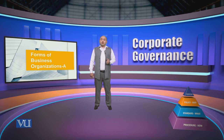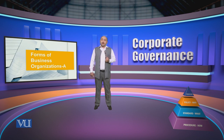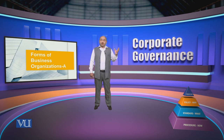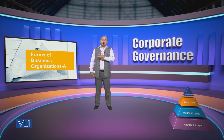Today we are going to be talking about the different forms of business organizations. In that context, there can be three fundamentally different types of organizations: one could be a public sector organization, the second one could be a business organization, and the third one could be a social organization.